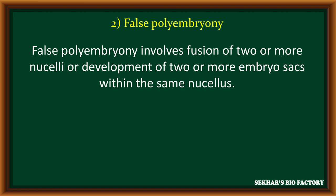The second type is false polyembryony. In false polyembryony, it involves the fusion of two or more nuclei or the development of two or more embryo sacs within the same ovule. More than one embryo sac is developed within one single ovule, which may develop more than one embryo. This is called false polyembryony.